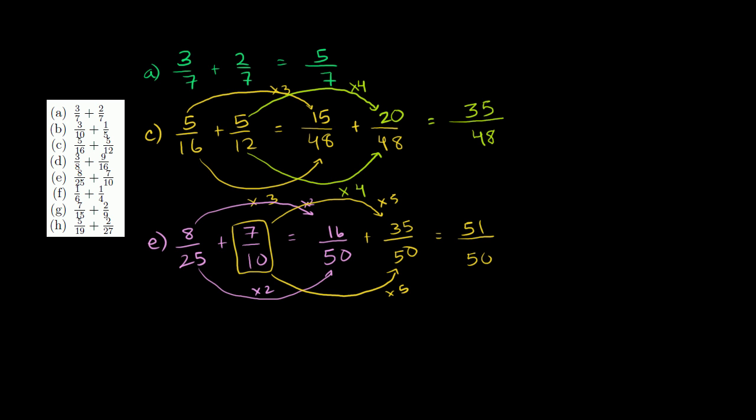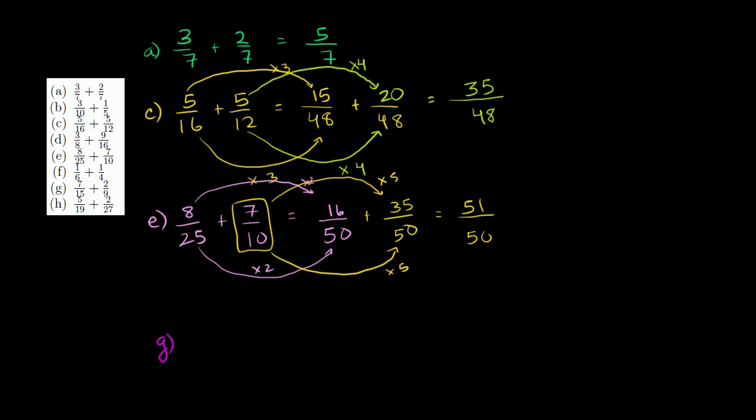Problem, let's see, G. Let me do it in a new color. Problem G. So here we have 7 over 15, and I'll write the second one in a different color, plus 2 over 9. Once again, denominators are different. Find a common denominator. What is the smallest number that both 15 and 9 go into? Let's see, 15 times 2 is 30. Nope, not divisible by 9. 15 times 3 is 45. That works. 45 is divisible by 9. So we use 45.